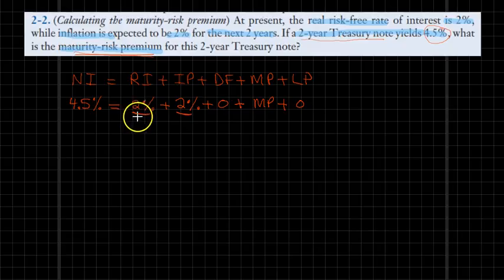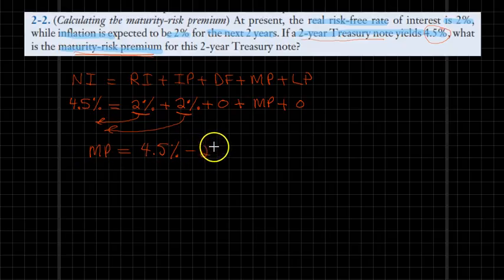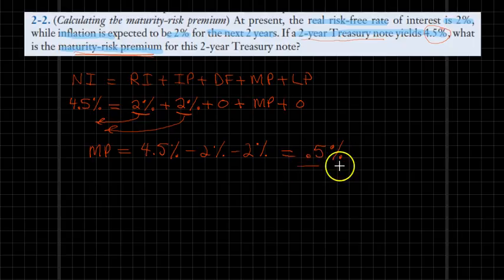Let's do the algebra. We move these two numbers to the left-hand side, and ultimately the maturity premium is equal to 4.5% minus 2% minus 2%, and this comes out as 0.5%.